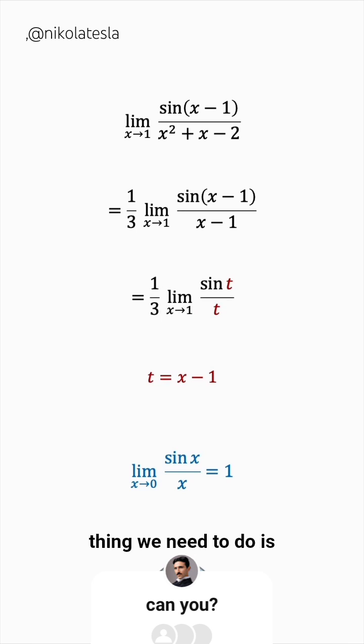The last thing we need to do is make the limit in terms of t. It's still in terms of x, so solving for x in terms of t, we get t plus 1. We'll replace x by t plus 1. So if t plus 1 is approaching 1, this means t is approaching 0. And now it has exactly the form we know and therefore this limit is 1.